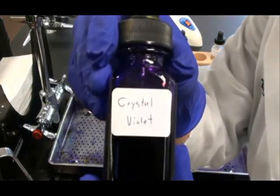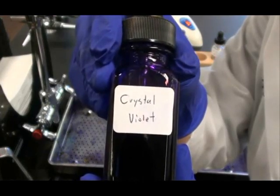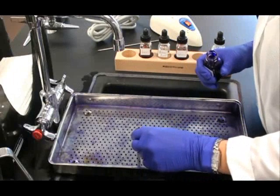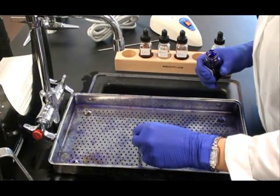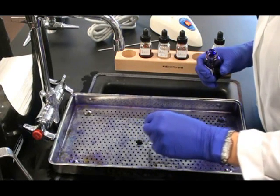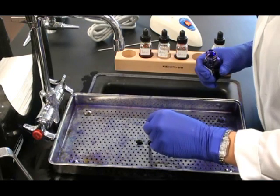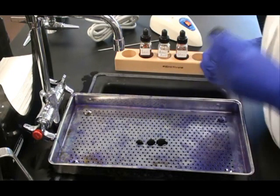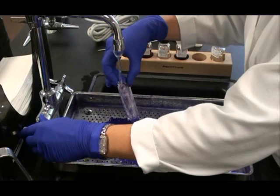So my first step is to apply Crystal Violet. This is my primary stain. I let drops of Crystal Violet fall onto all three of the smears on my slide. Then I wait for one minute.